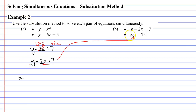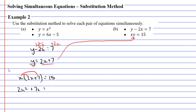I'll write down x next to y, which is the whole expression 2x plus 7, so I need to put it in brackets: x(2x plus 7) equals 15. When I get brackets, I need to expand them: x times 2x is 2x squared, and x times 7 is 7x, so this equals 15. To make this quadratic equation equal to 0, I subtract 15 from both sides, giving me 2x squared plus 7x minus 15 equals 0.